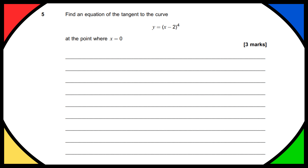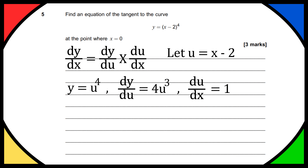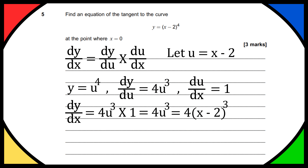Hey everyone, so today I'm going to be teaching you how to find the equation of a tangent to a curve, using this past paper question. We'll also be using the chain rule for differentiation. We have y equals (x minus 2) to the power of 4, and we need to find the equation of the tangent at the point where x equals 0. Using the chain rule, let u equal x minus 2, so y equals u to the power of 4. dy over du is 4u cubed, and du over dx is 1. So dy over dx equals 4u cubed, which is 4(x minus 2) cubed.